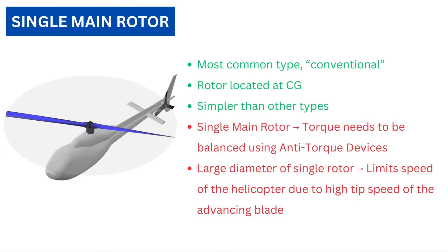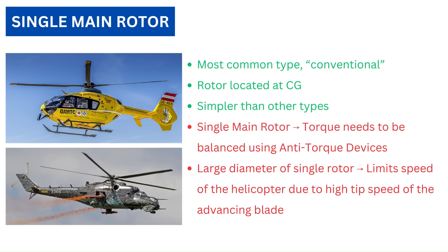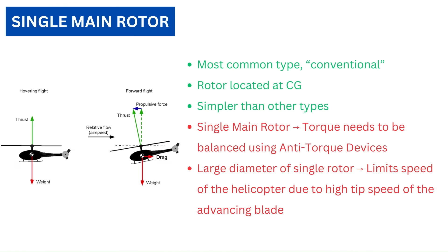The single main rotor is the most common configuration. 95% of all helicopters currently flying are of this category. The rotor is located at the center of gravity. This type is desirable because of its relative simplicity compared to other types.